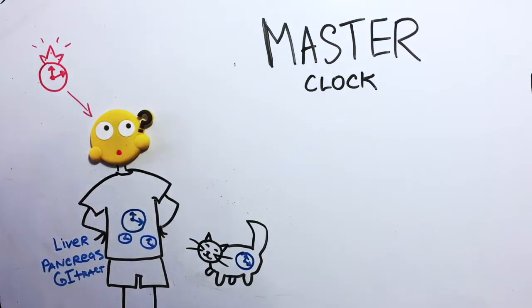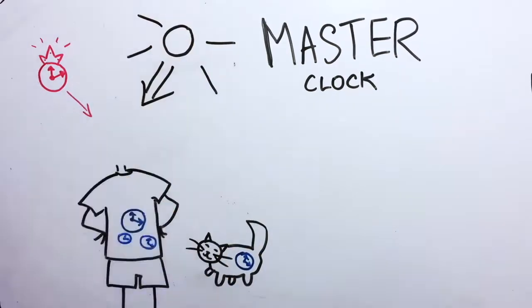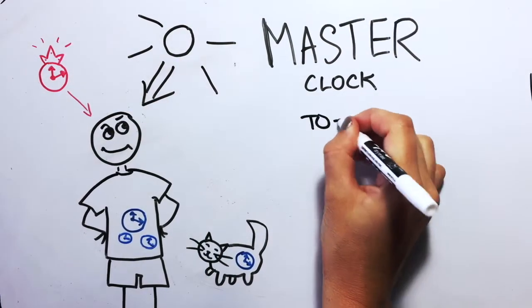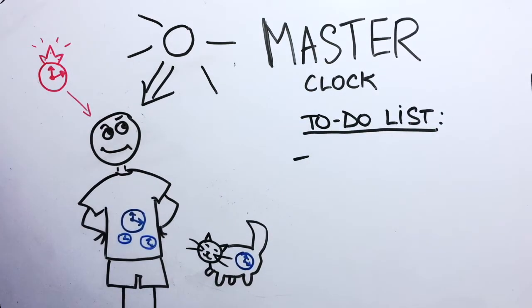The master clock gets reset daily by light, which it perceives directly through our eyes. So what does the master clock do? Just everything. It sets daily patterns for our biology, physiology and behavior.